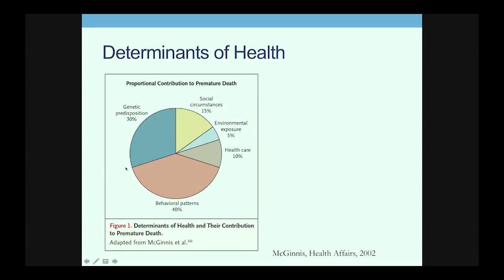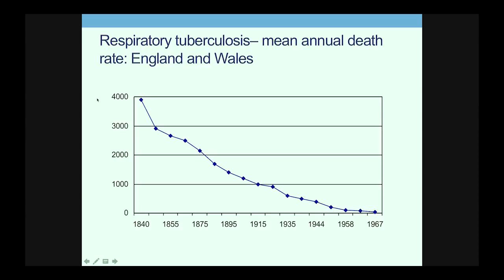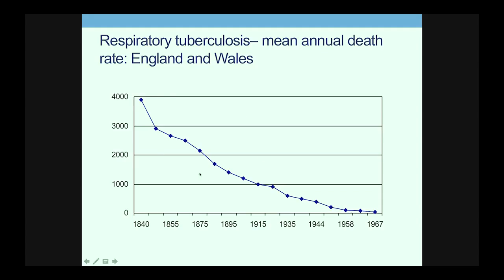That's a very difficult idea to truly understand, because so much of how our society is organized argues against it. I like this graph whenever I think about how to best explain the social determinants of health. This is a slide of mean annual death rate — in thousands — in England and Wales from 1840 to 1967. Tuberculosis is an infectious disease, and antibiotics is one of the great accomplishments of modern medicine. So when did antibiotics for tuberculosis become widely available? Here, in 1959.